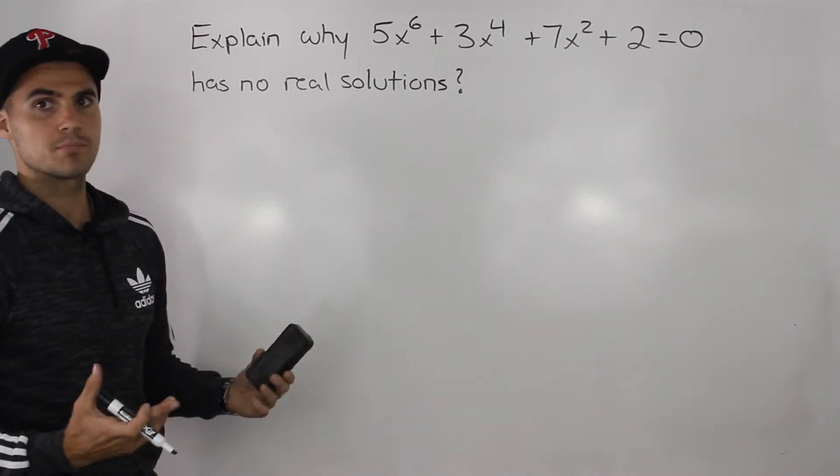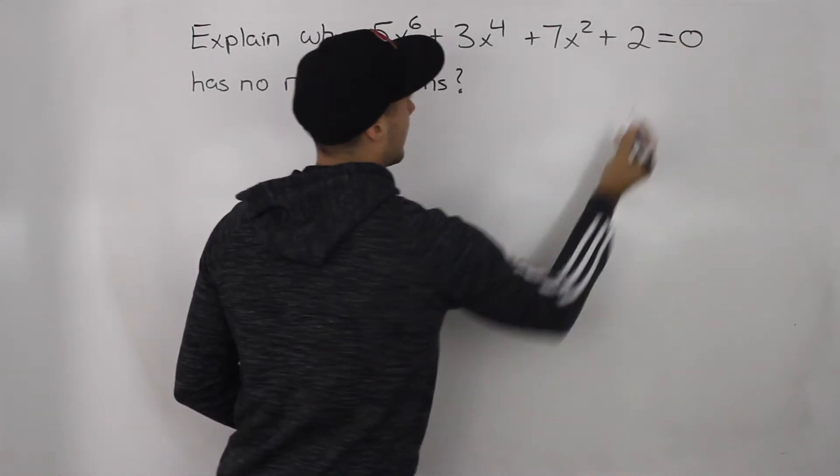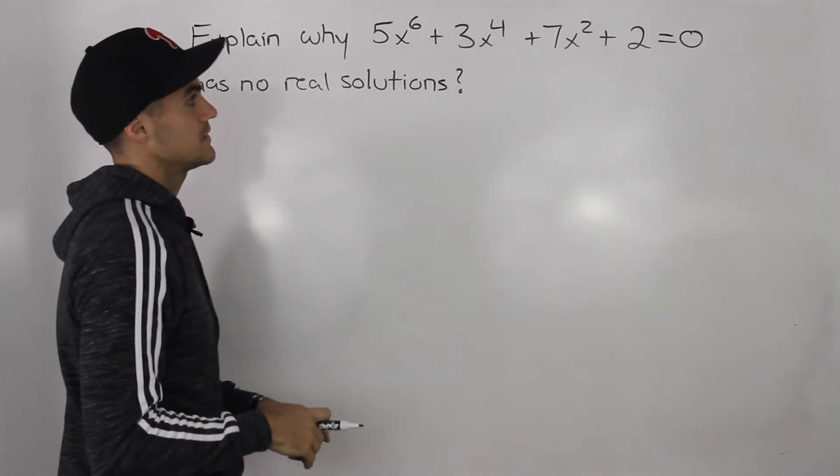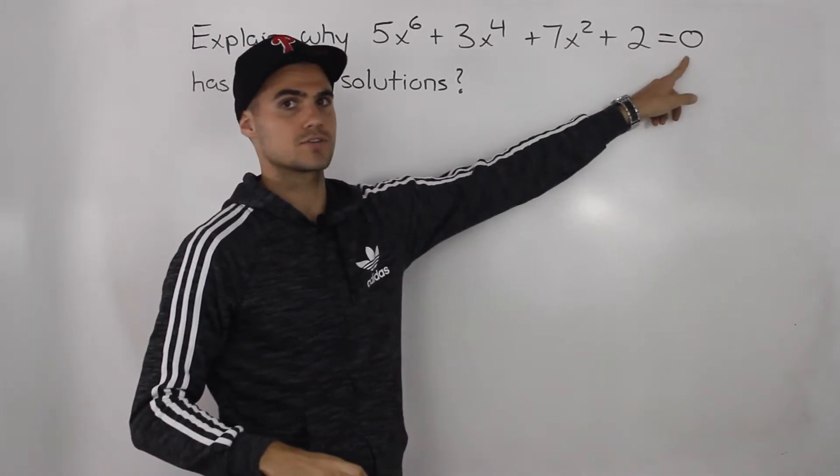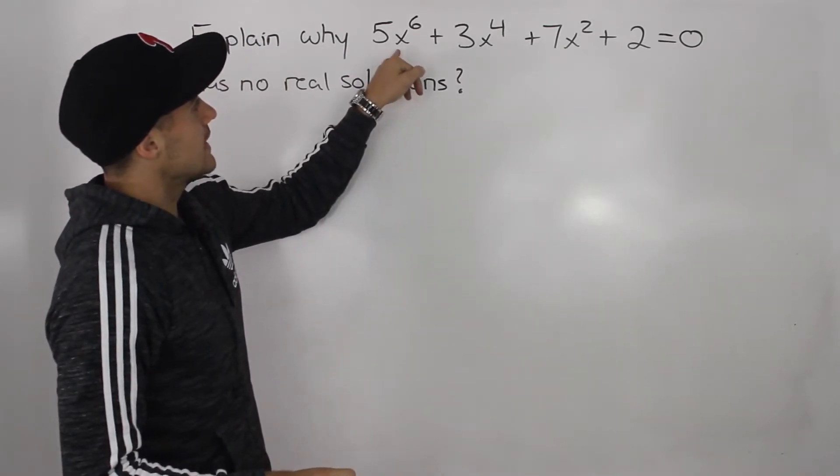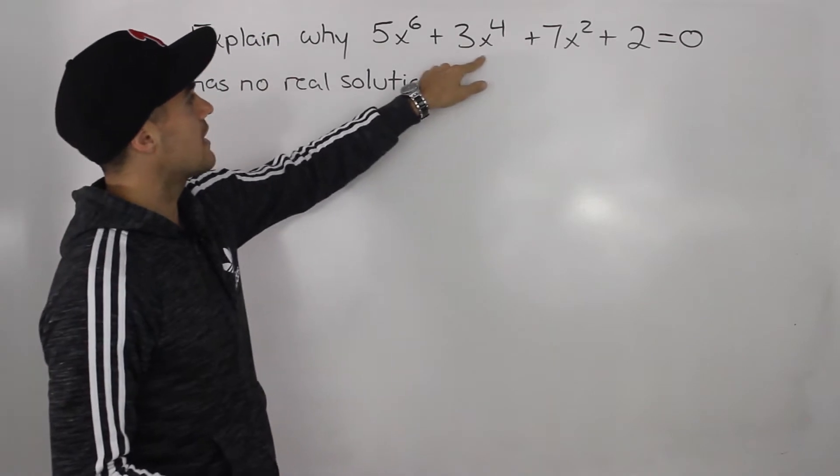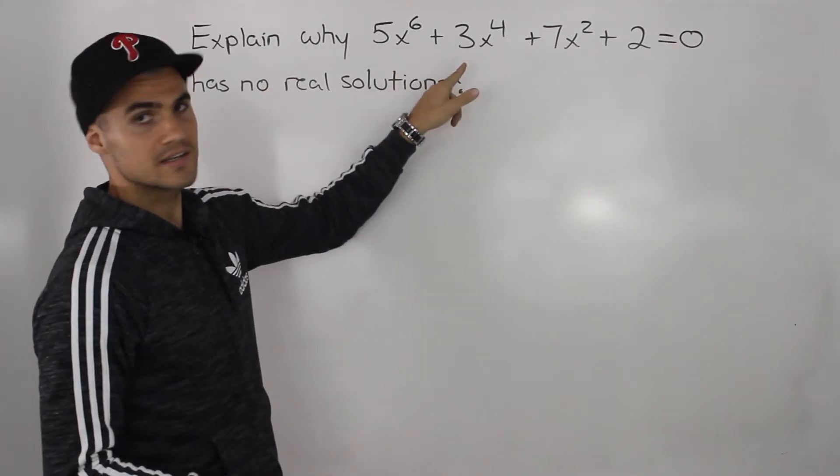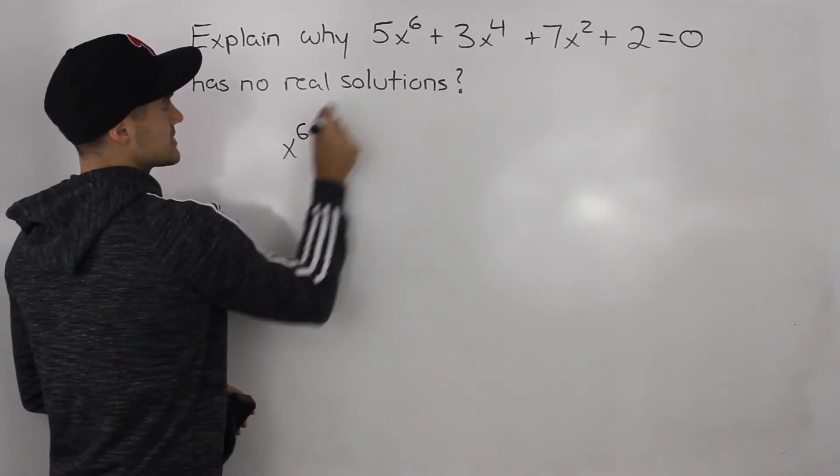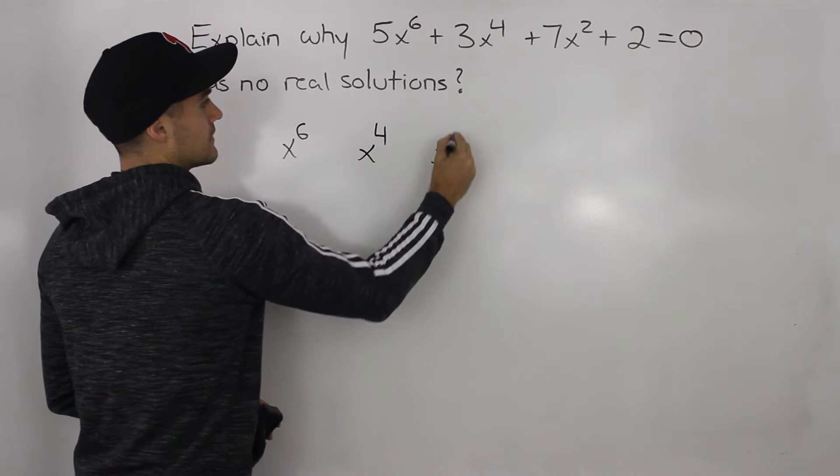Notice that this is a polynomial equation with an equal sign, and everything is already brought to one side because the right side equals 0. Notice that in this polynomial function on the left side, all of the x's are to the power of an even number. We have x to the 6, x to the 4, and x squared.